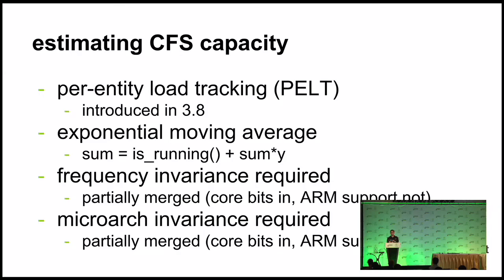The same applies to microarch invariance and big.LITTLE. You need the capacity estimate to take into account that if you have something running on, say, an A7, the A7's IPC is lower than an A15. That should be factored into capacity numbers — because if I want to migrate a task from an A7 to an A15, I need to understand that a task running on an A7 will take more time than on an A15, even at the same frequency. Similarly to frequency invariance, some of that code has gone upstream; some ARM-specific stuff still needs to go upstream, but it's written.